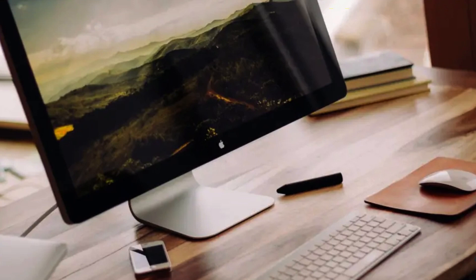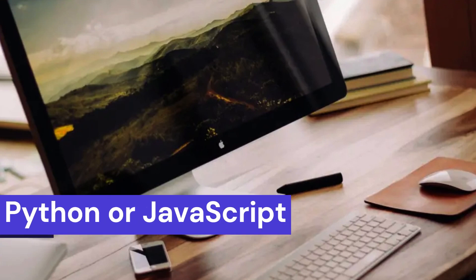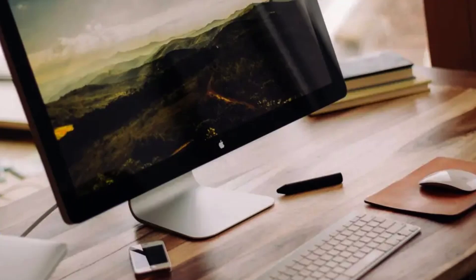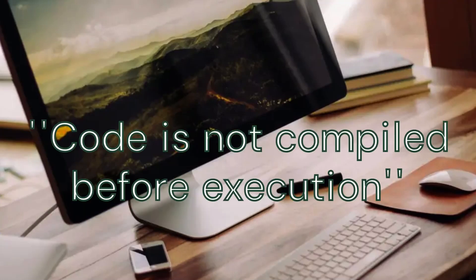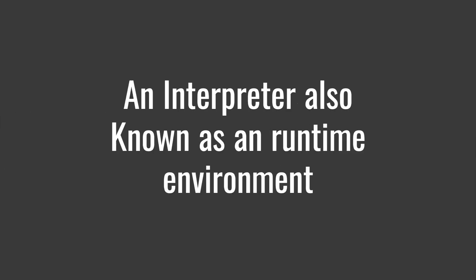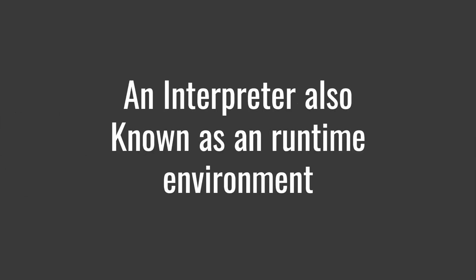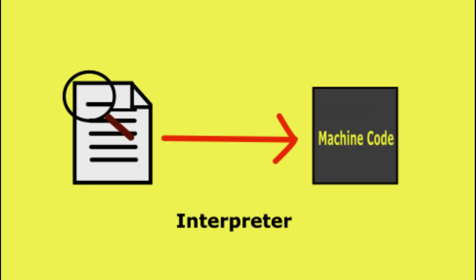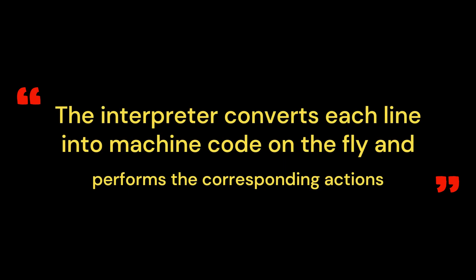Interpretation. In contrast to compiled languages, there are languages like Python or JavaScript that do not compile the source code. Instead, the code is interpreted line by line at runtime. An interpreter, also known as a runtime environment, reads the source code line by line and executes the instructions immediately. The interpreter converts each line into machine code on the fly and performs the corresponding actions. This process continues until the program is complete or encounters an error.